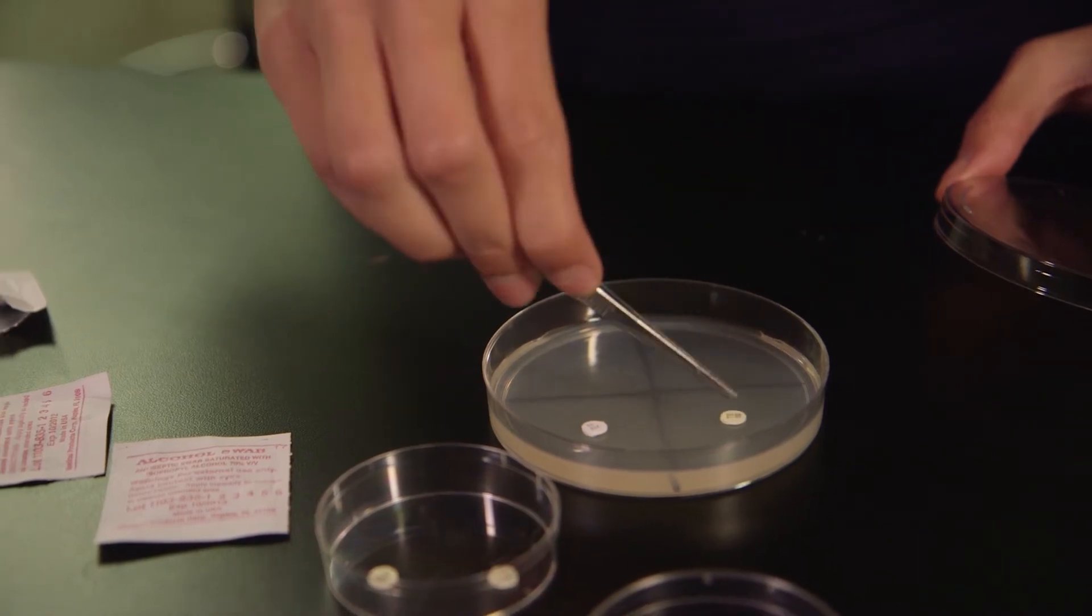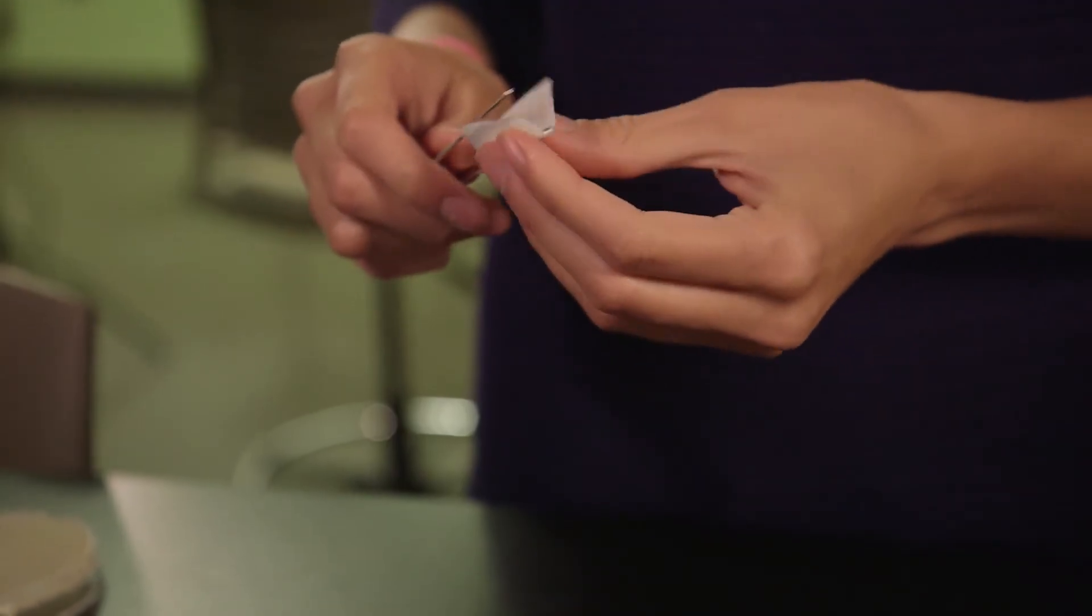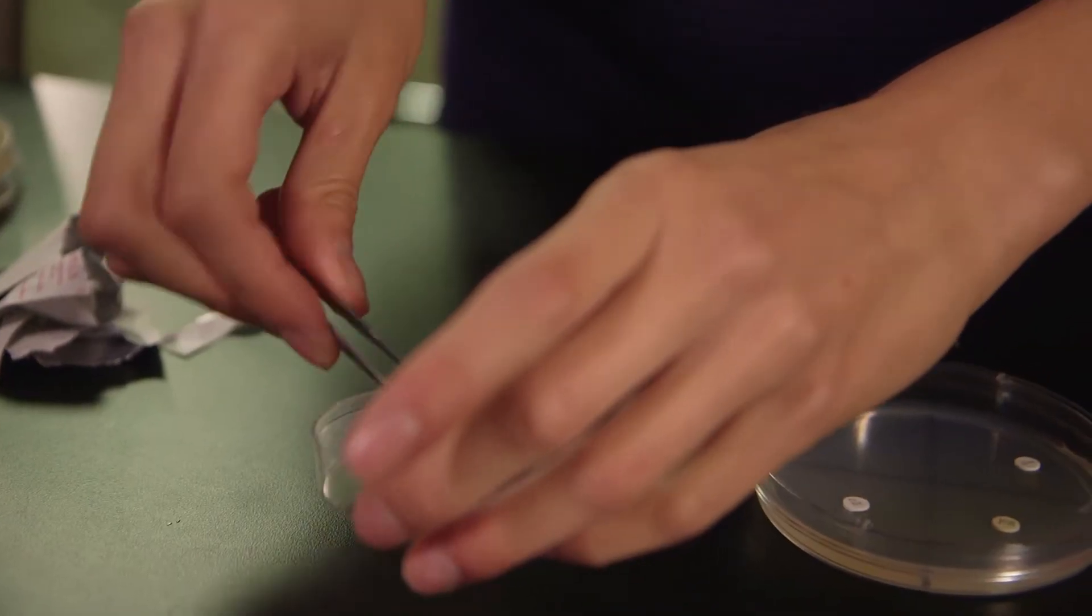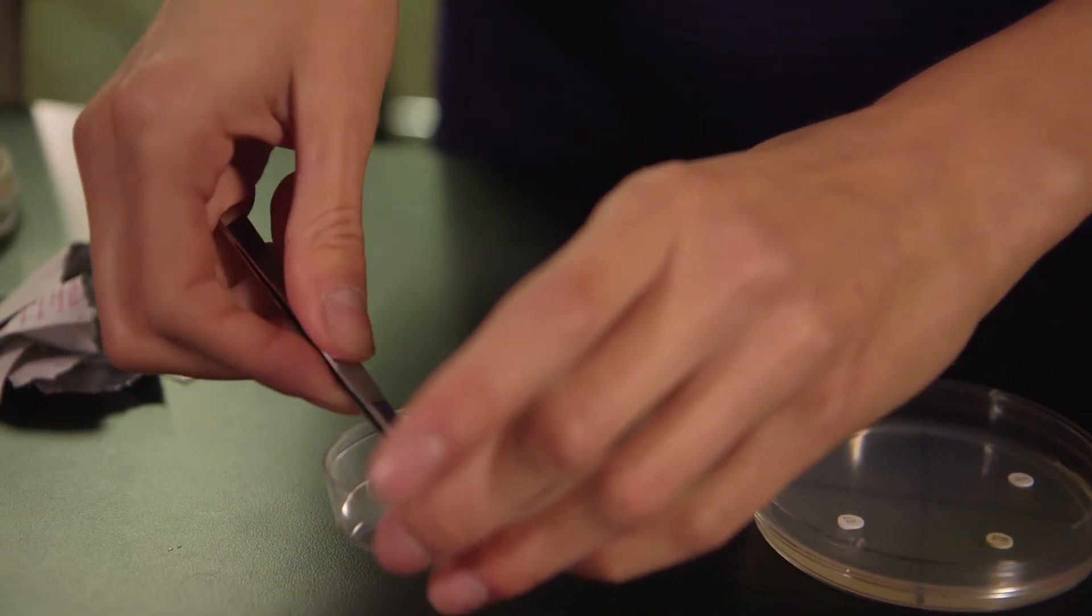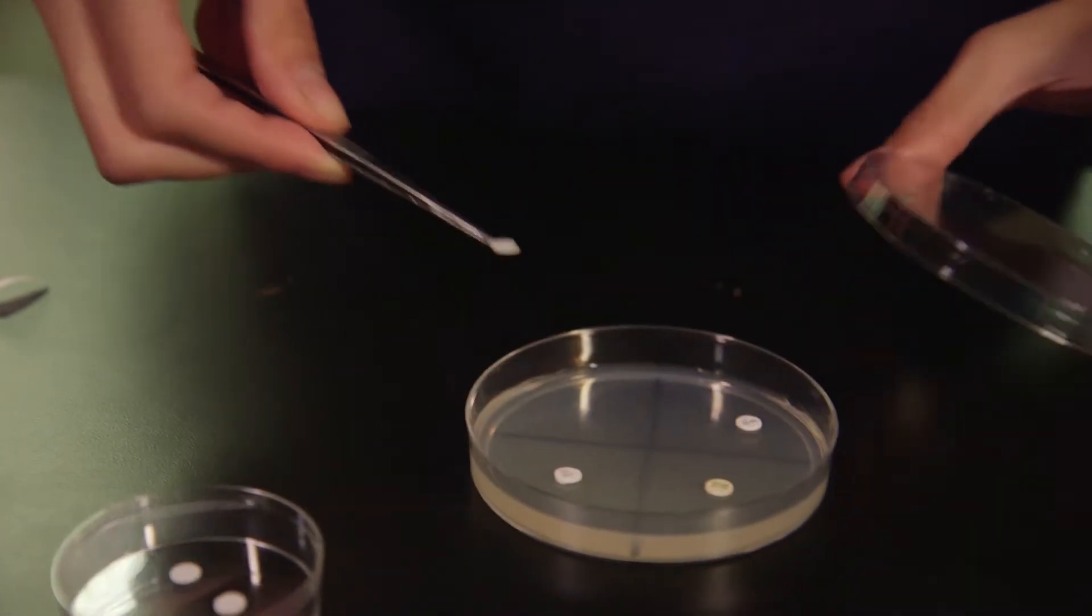Repeat the procedure for the other two antibiotics, sterilizing the forceps before you remove a disc each time. Finally, you will place one blank disc in the last quadrant, the same way you place an antibiotic disc.